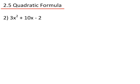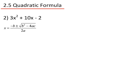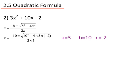Example 2: 3x² + 10x − 2. First we identify a, b and c. So a equals 3, b equals 10 and c equals minus 2. Taking the quadratic formula, we now substitute those values in: a is 3, b is 10 and c is minus 2.